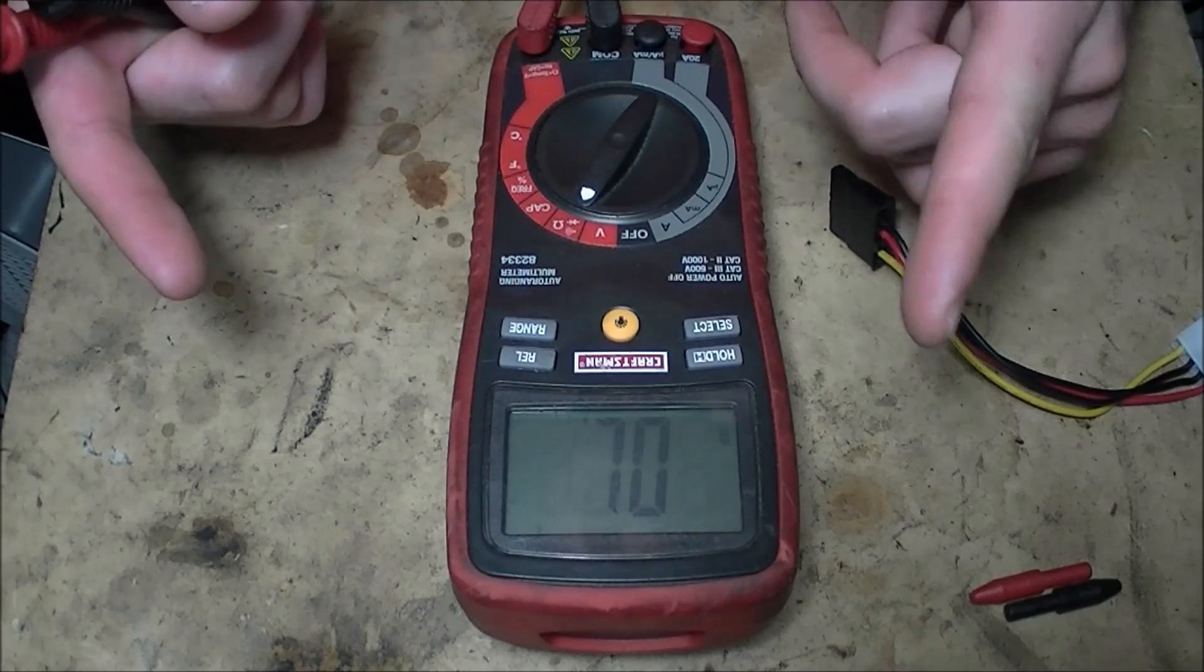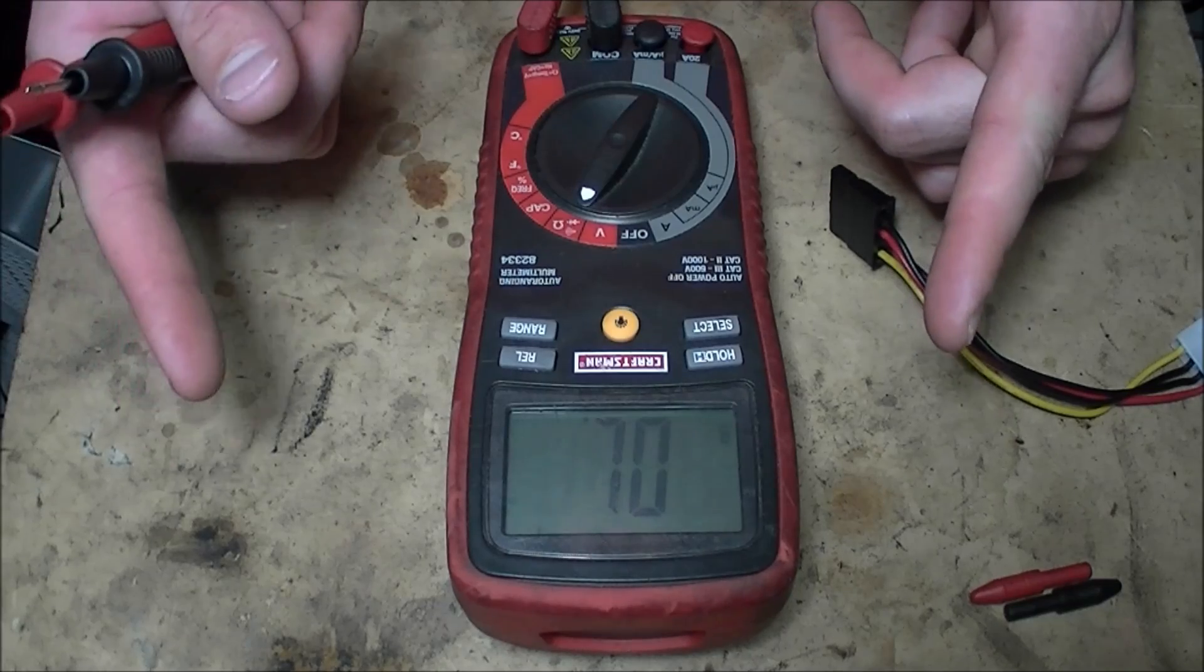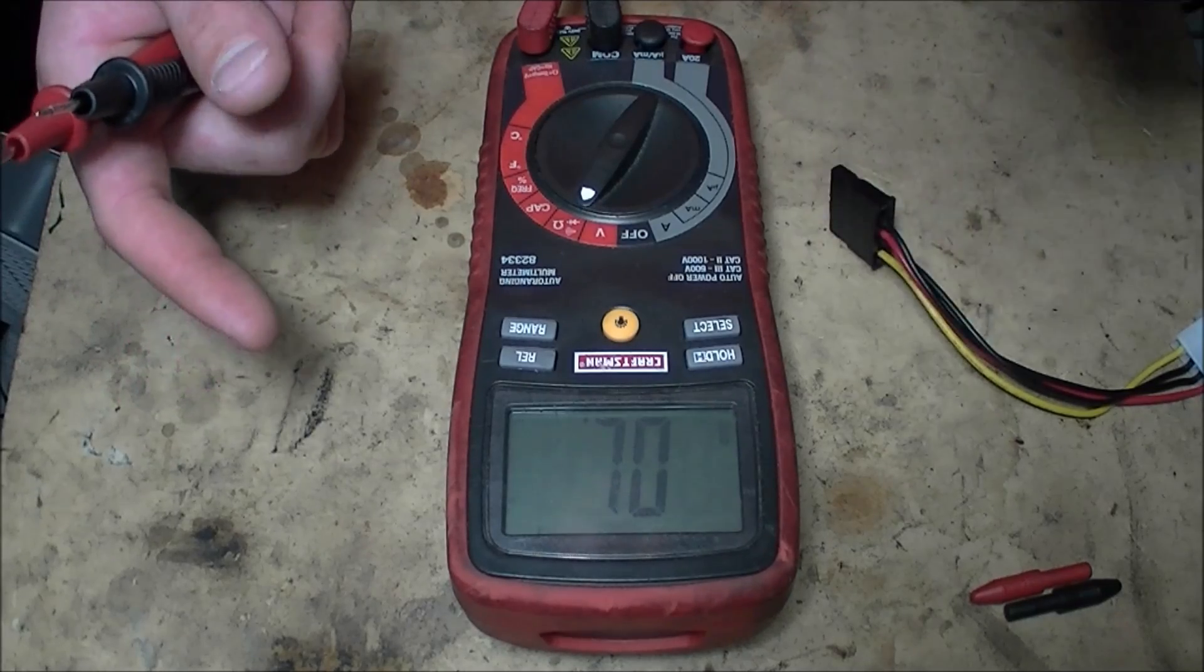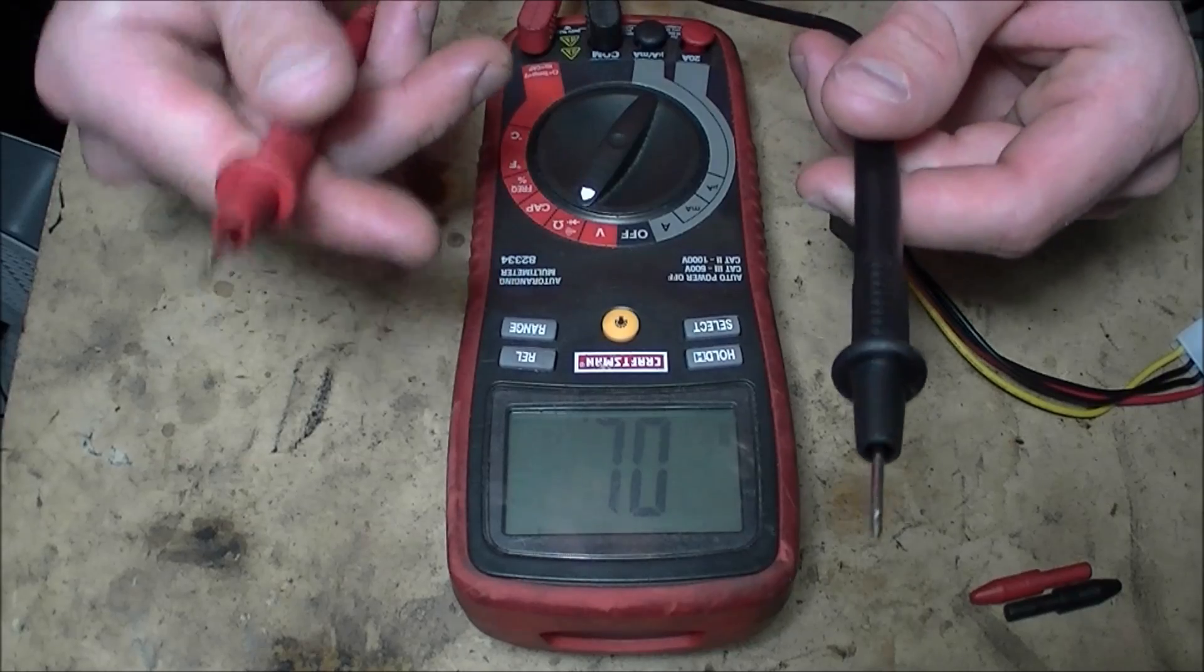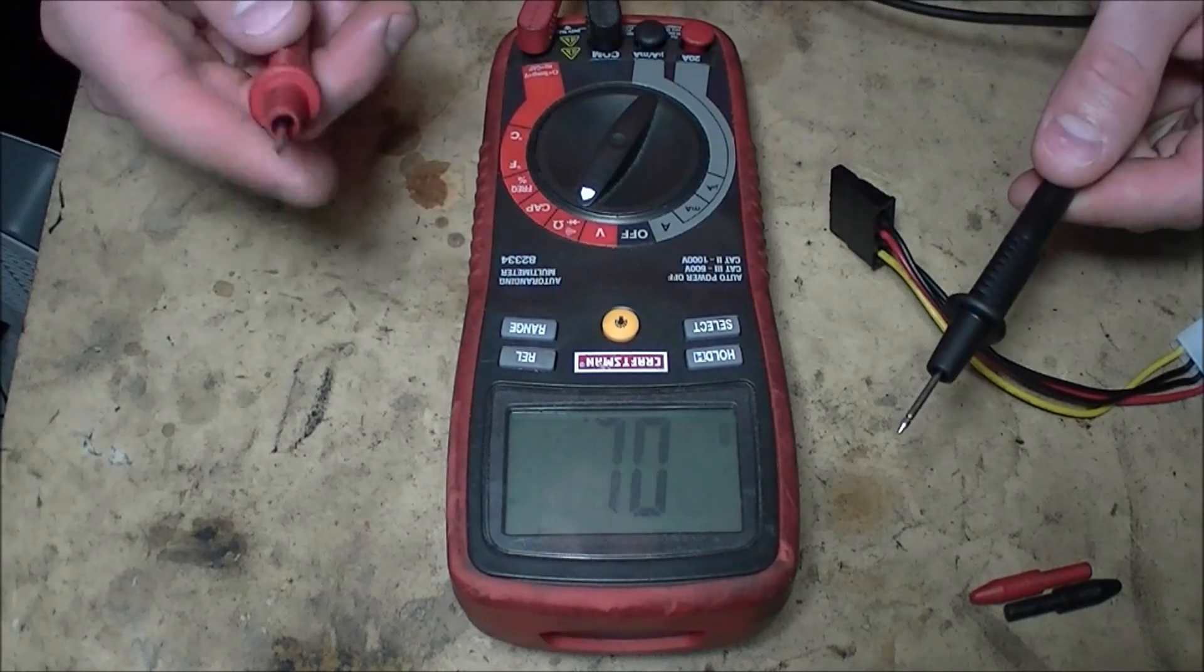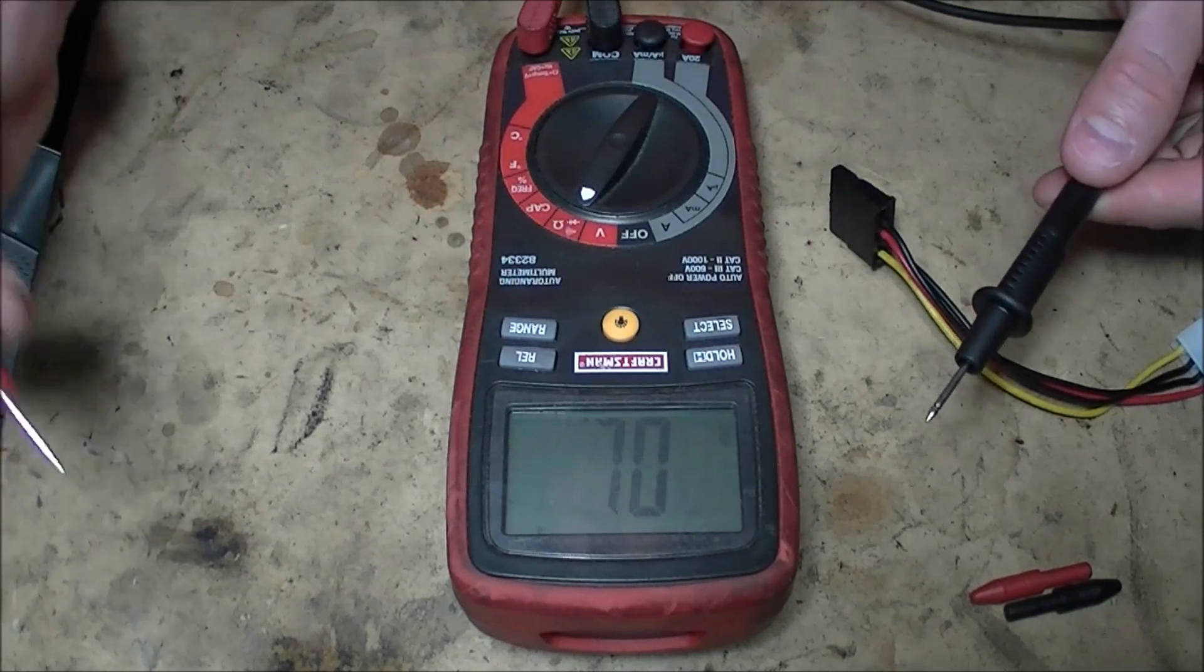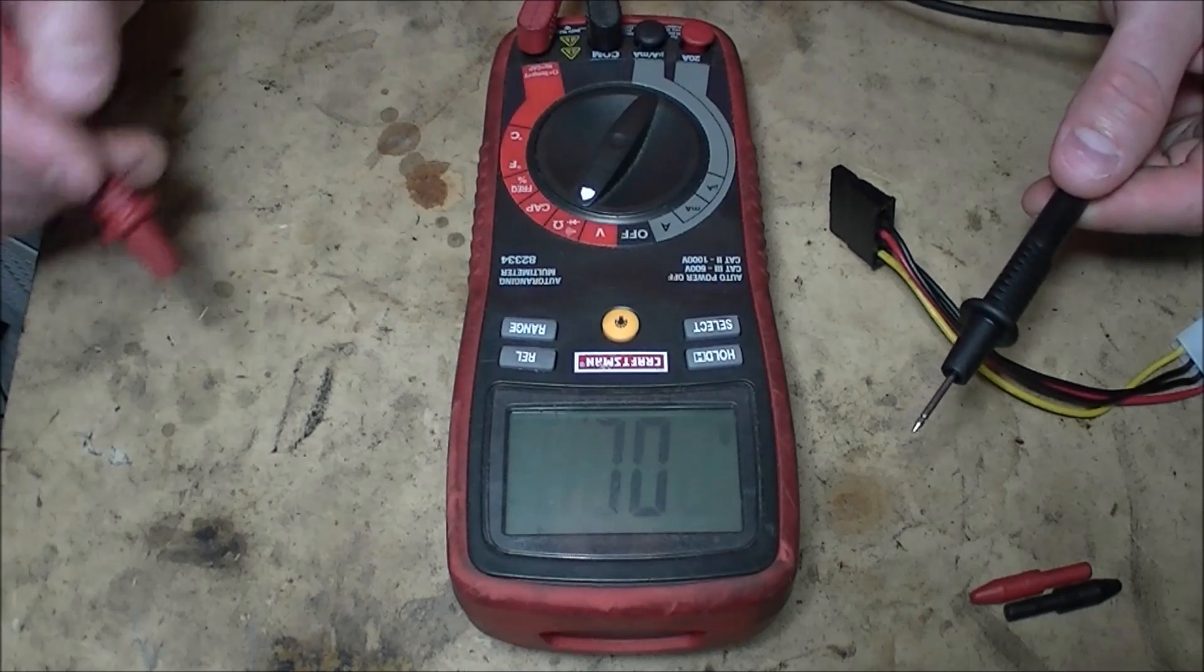So you put your lead—it doesn't matter which one, negative or positive—and you put it on one side, and then you go to the other side and you test a bunch of wires until it beeps. Then that tells you where that wire you're touching is running. I use this a lot with automotive, trying to find where an ECU wire is, a computer wire, or an injector wire.